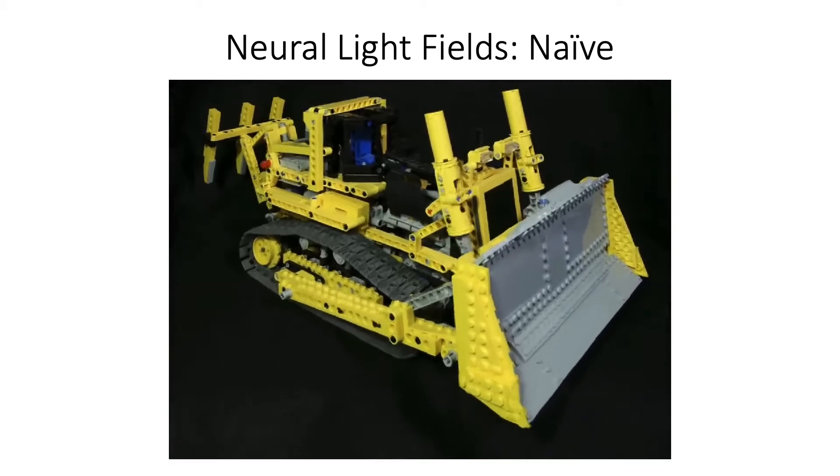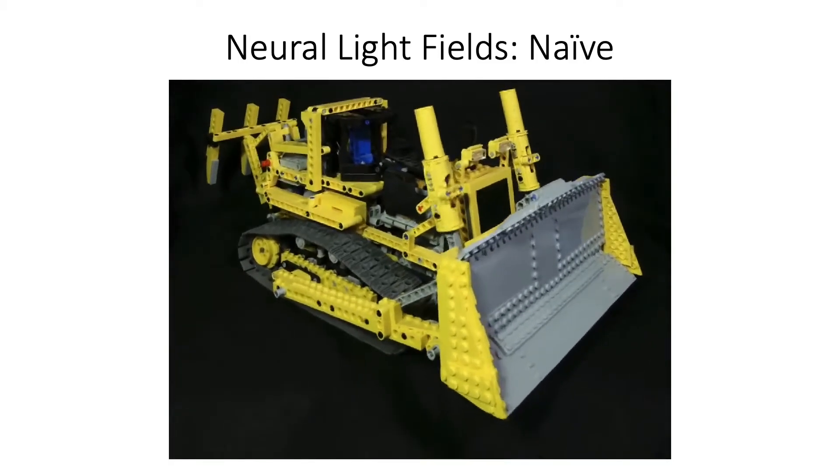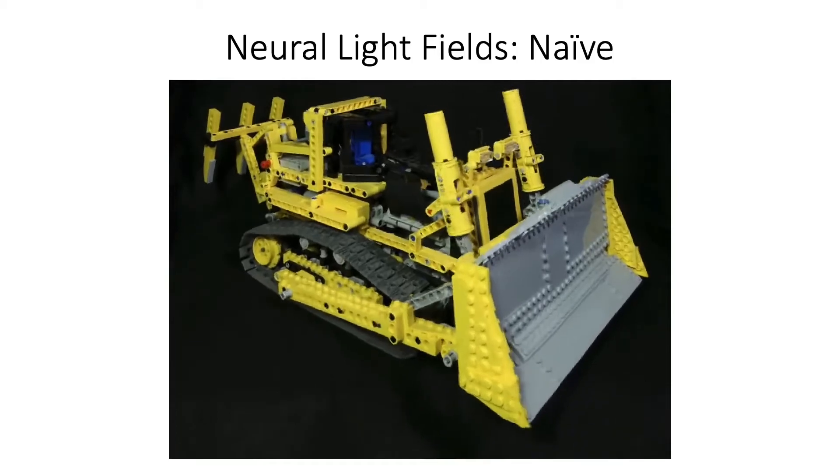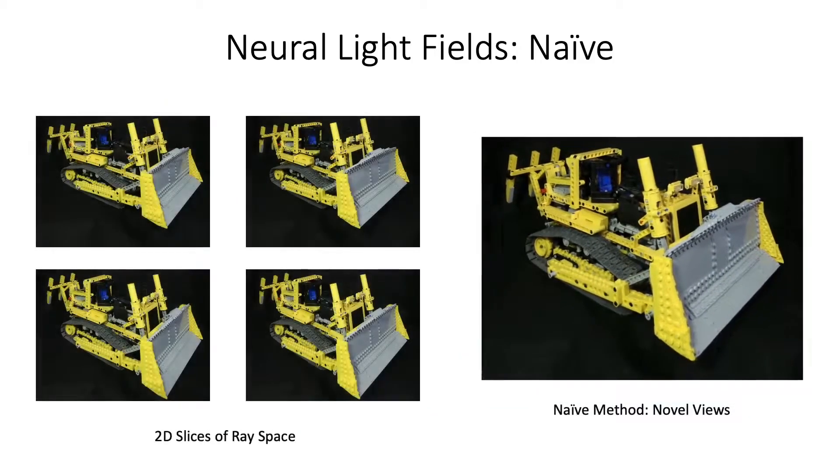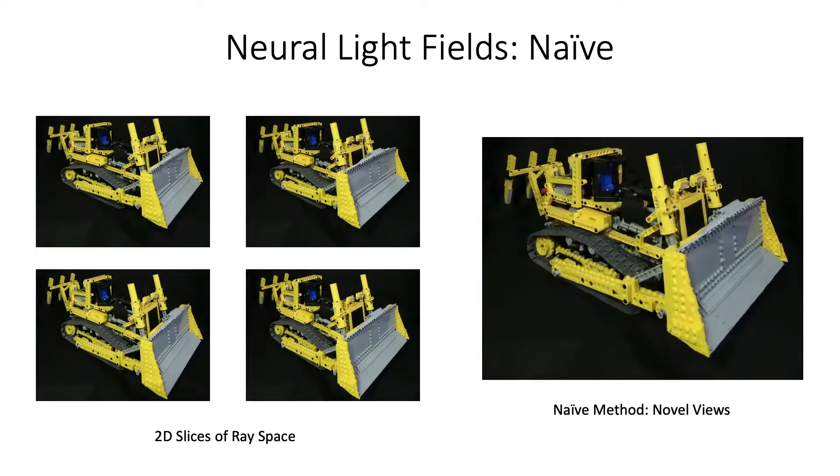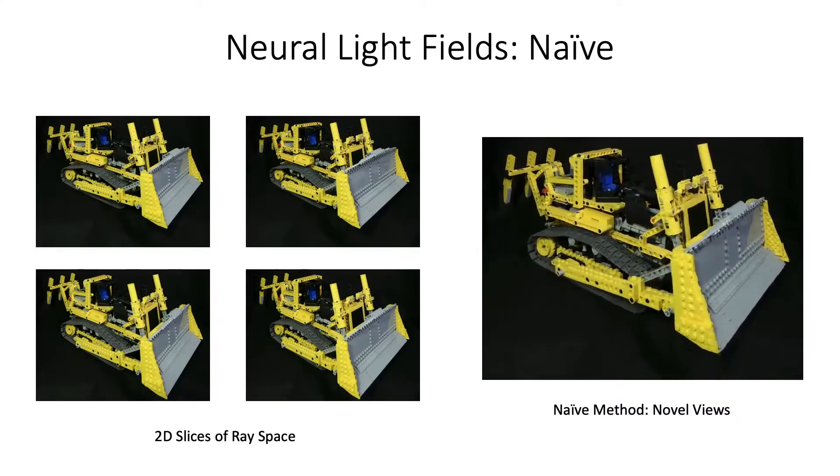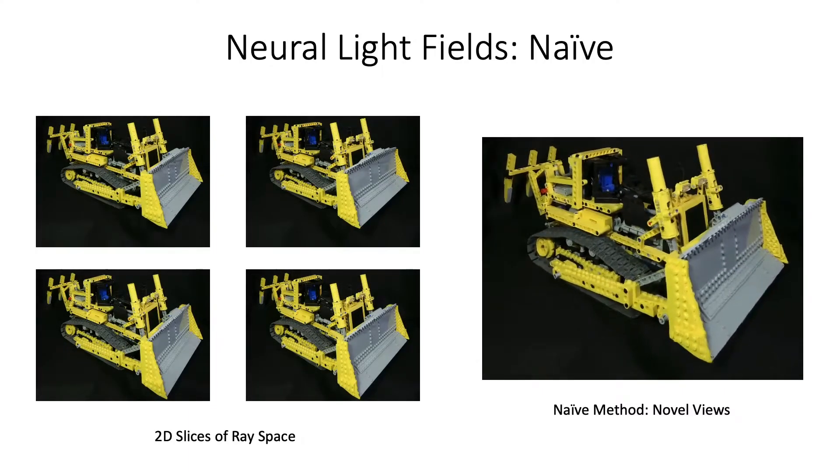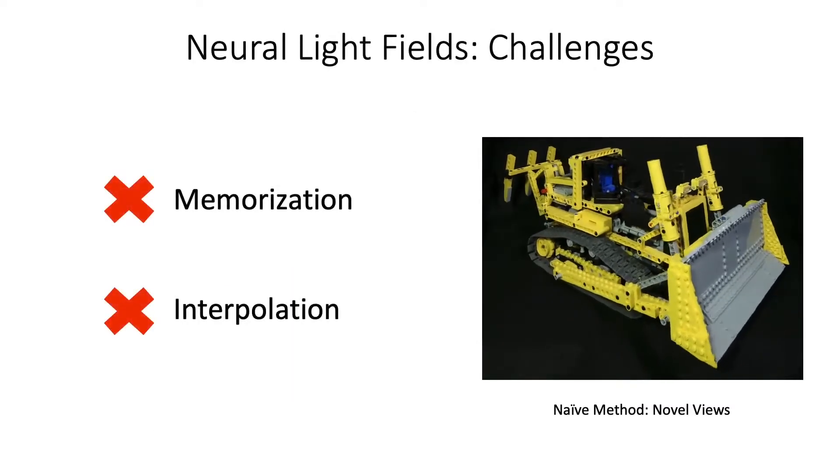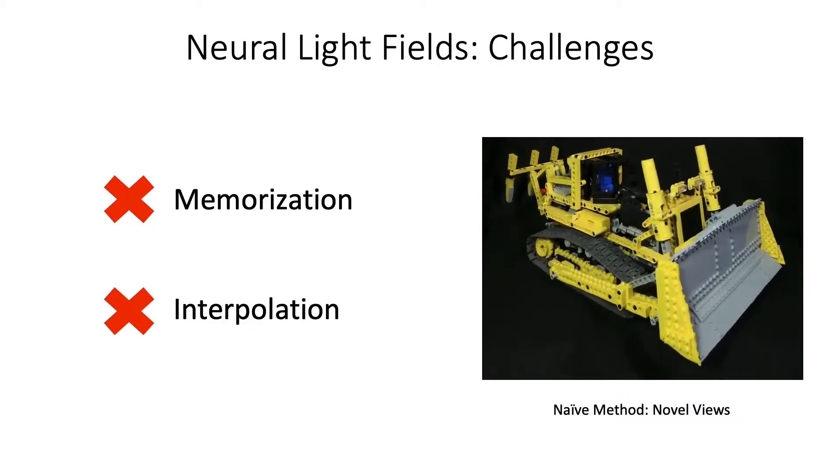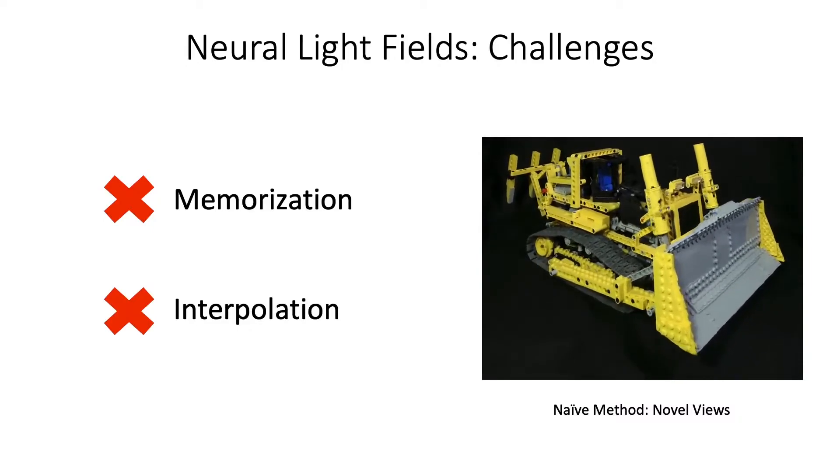However, learning a neural light field using the same architecture as a neural radiance field leads to poor view synthesis quality. This is because any collection of input training images only observes a sparse set of 2D slices of the full 4D ray space. Since each ray is observed at most once in the input, this makes the task of simply memorizing the input data difficult.